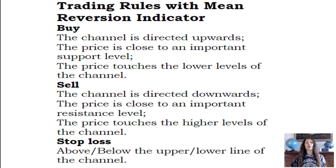Trading rules with the mean reversion indicator: for a buy, the price is close to an important support level and touches the lower levels of the channel. For a sell, the price is close to an important resistance level and touches the higher levels of the channel. Stop loss is placed above or below the upper or lower line of the channel.